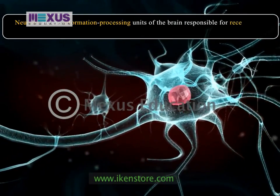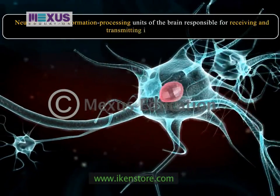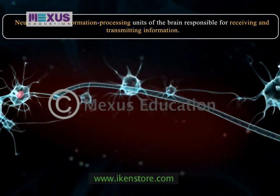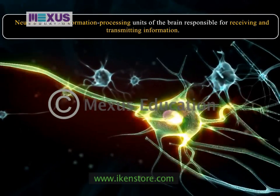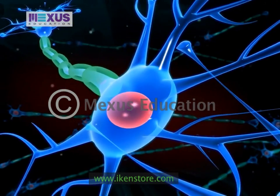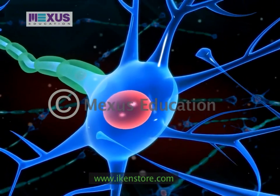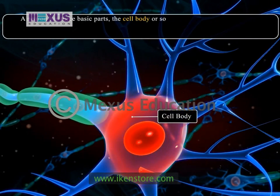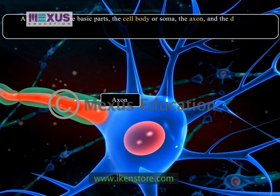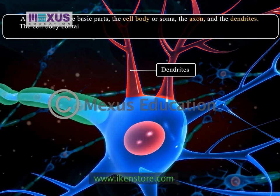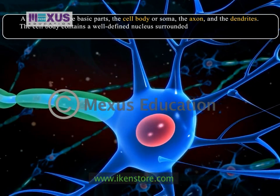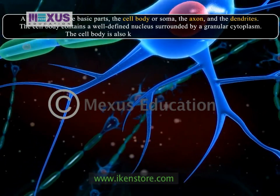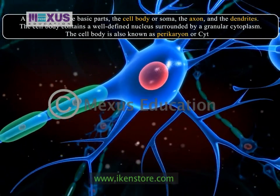Neurons are responsible for receiving and transmitting information. Each part of the neuron plays a role in the communication of information throughout the body. A neuron has three basic parts: the cell body, the axon, and the dendrites. The cell body contains a well-defined nucleus surrounded by a granular cytoplasm. The cell body is also known as perikaryon or cyton.